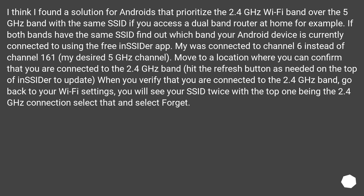I found a solution for Android devices that prioritize the 2.4GHz band over the 5GHz band when using the same SSID on a dual-band router. If both bands have the same SSID, find out which band your Android device is currently connected to using the free Insider app. Mine was connected to channel 6 instead of channel 161, my desired 5GHz channel. Move to a location where you can confirm that you are connected to the 2.4GHz band and hit the refresh button on Insider to update.